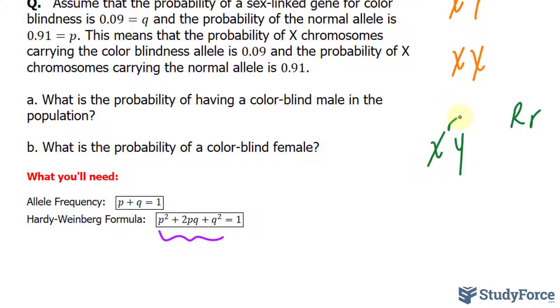And we're told in the question that the allele frequency for little r is 0.09. So the answer here, the probability, is 0.09.